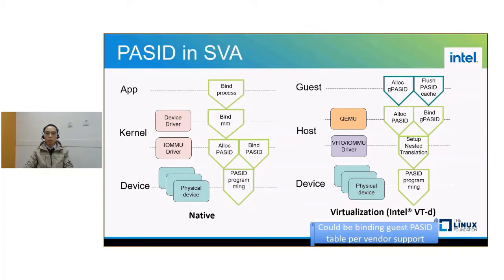After that, the device is able to access the processor virtual address space with the PASID. When it comes to virtualization, the guest follows the same steps to set up SVA. However, the hypervisor needs to trap guest's specific operations in order to set up nested translation for SVA. For example, Intel VT-d requires trapping guest PASID allocation and PASID cache flush to set up IOMMU nested translation for each PASID on the host side. For vendors which allow the guest to maintain the PASID table under nested translation, it needs to trap the guest PASID table initialization to bind the whole guest PASID table to host.